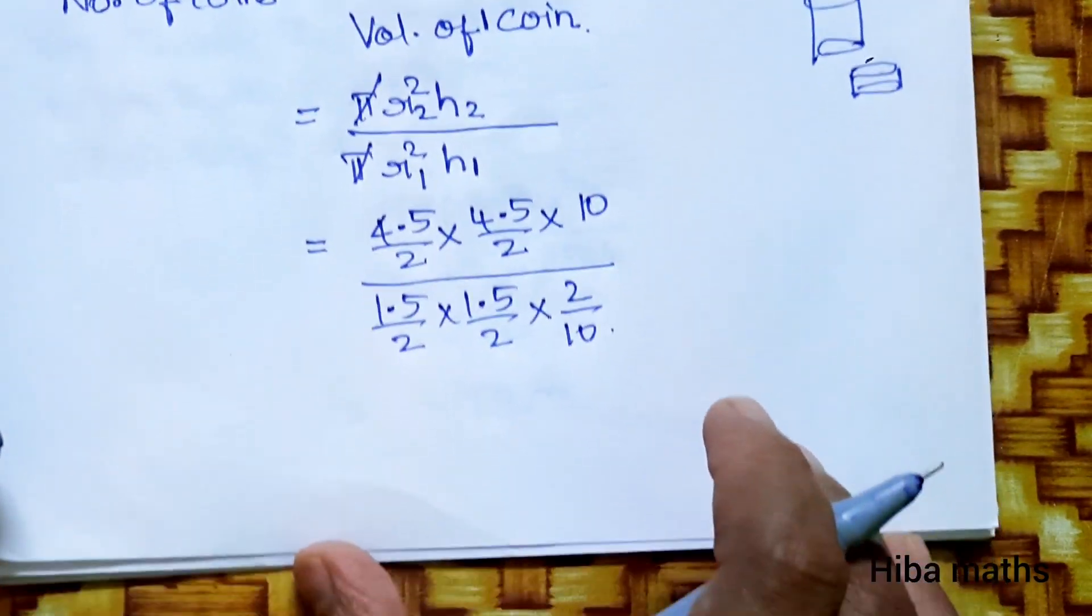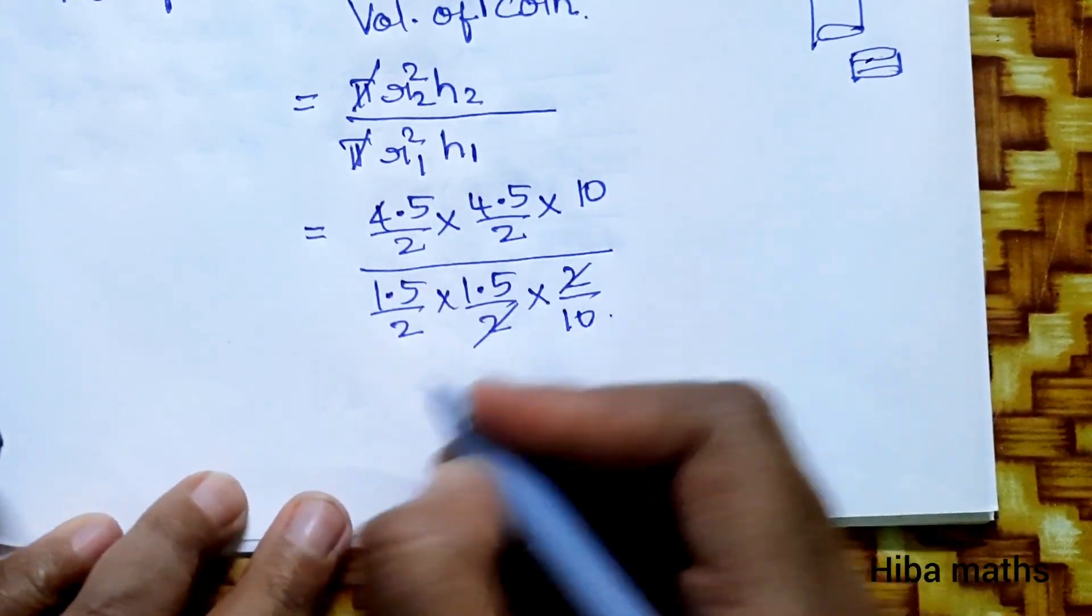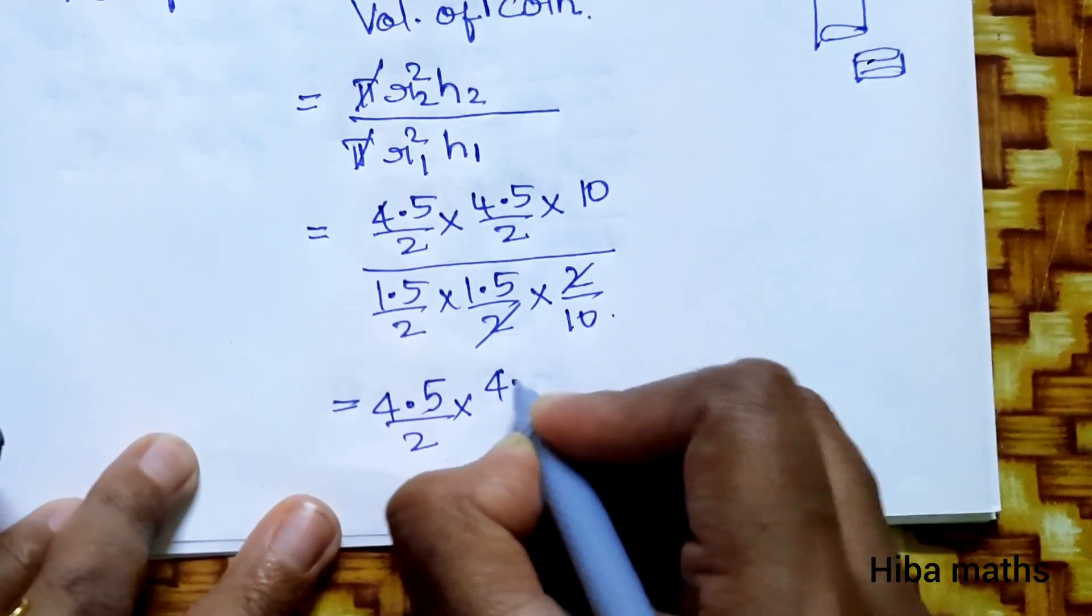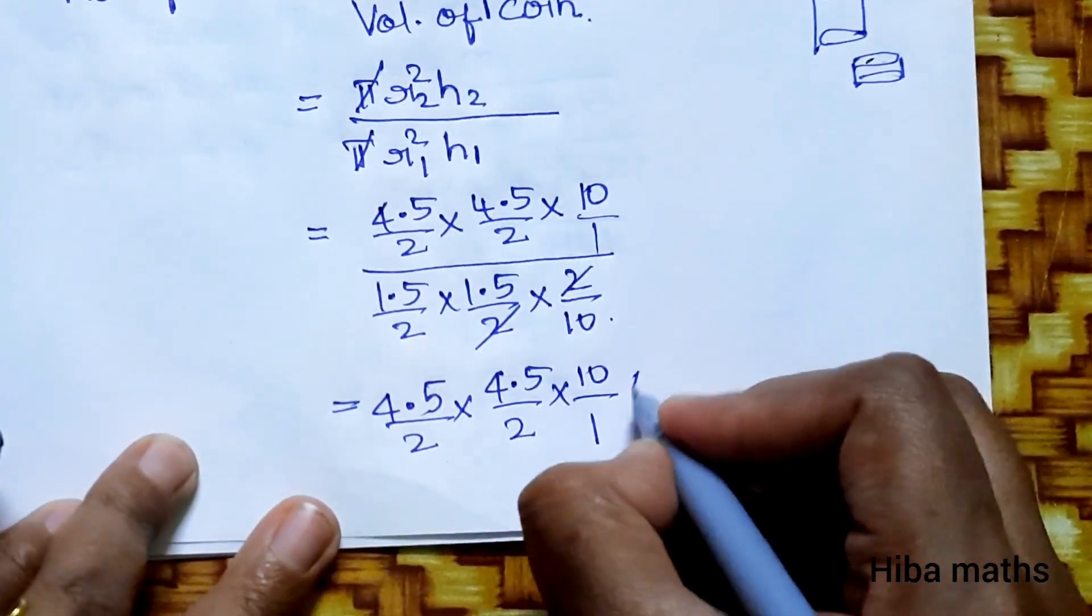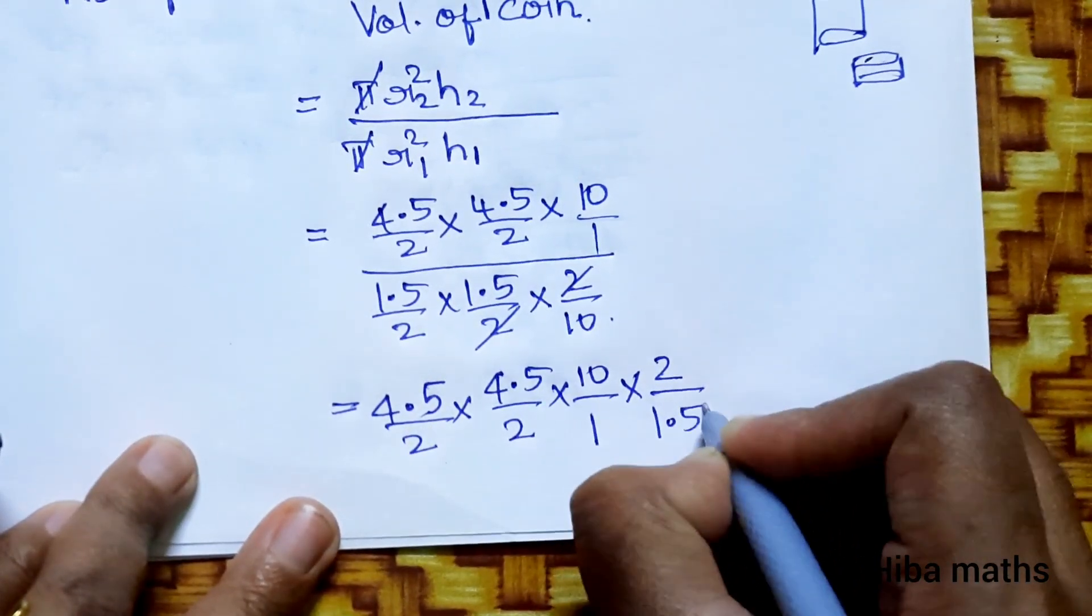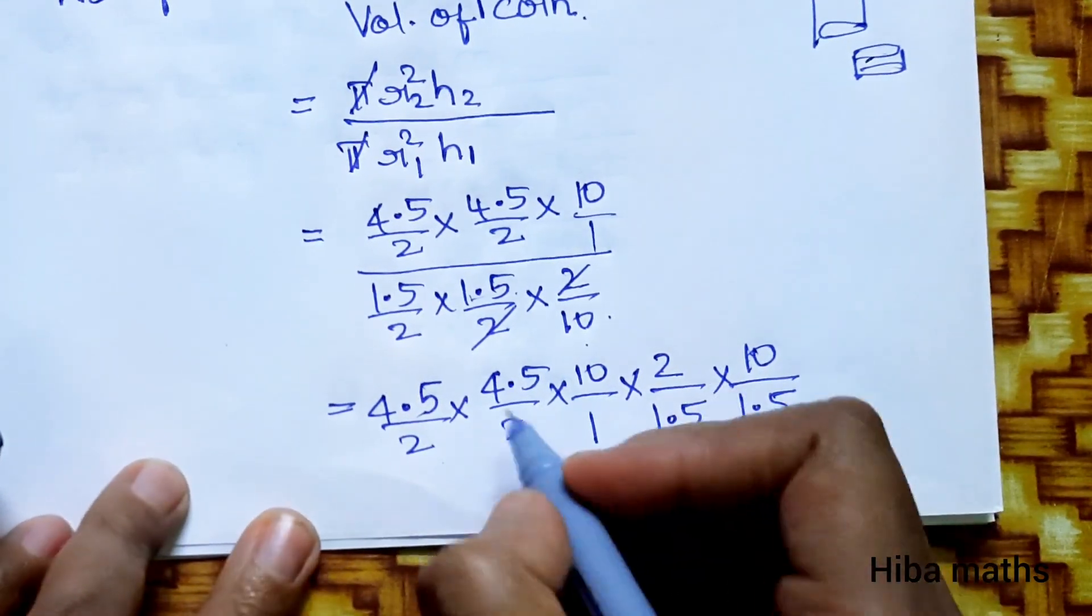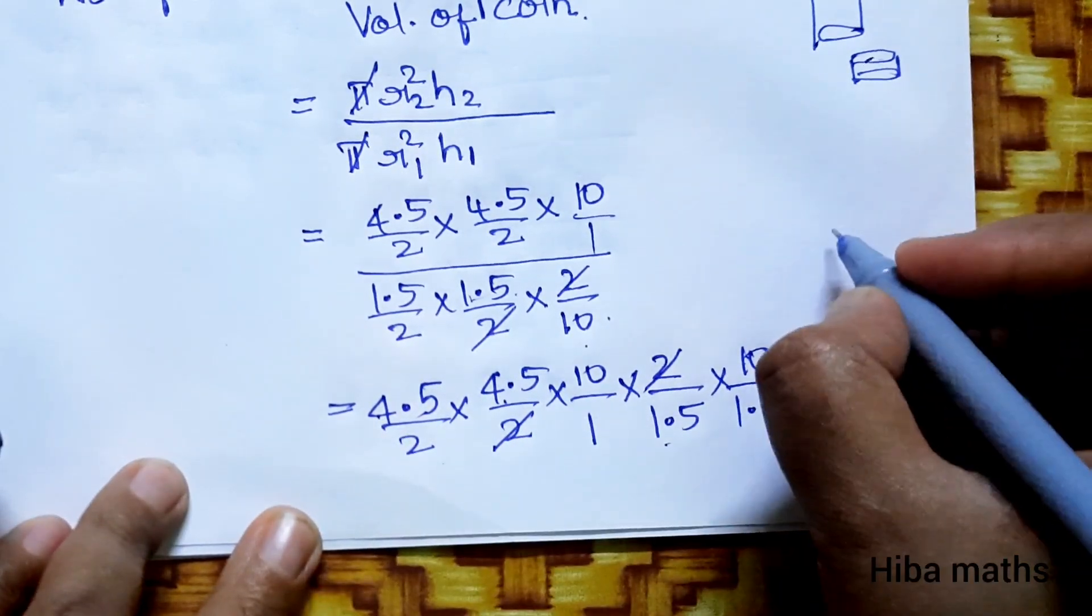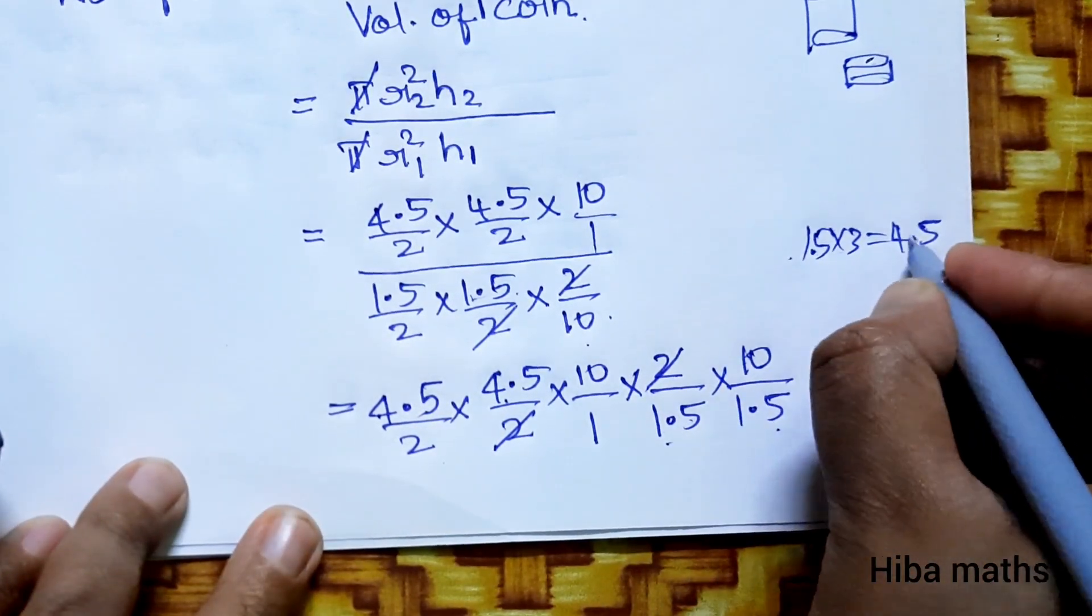r2 squared is 4.5 by 2, h2 is 10, divided by r1 squared which is 1.5 by 2 squared, times h1 which is 2 by 10. Now we solve. 2 to cancel. If we do the reciprocal, we get 4.5 by 2 times 4.5 by 2 times 10, reciprocal gives 2 by 1.5 times 2 by 1.5 times 10.